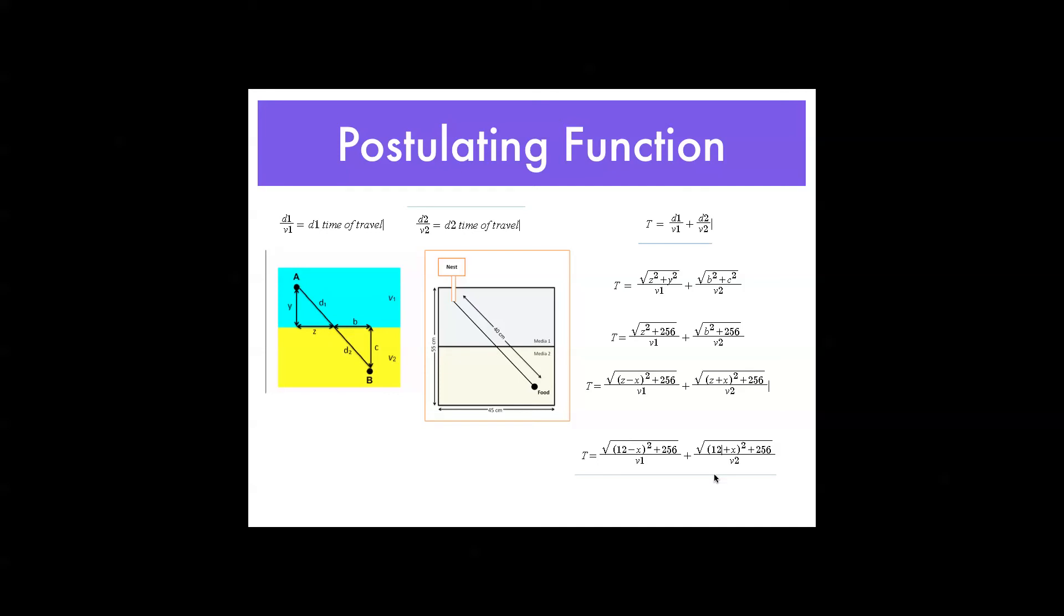And, you have your function. Now, if you find your velocity over each surface, then you're able to output time and, of course, use the graphing utility or the first derivative test to find the minimum of this function.